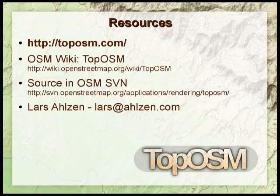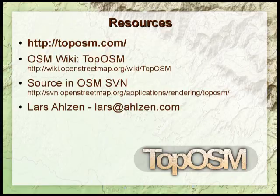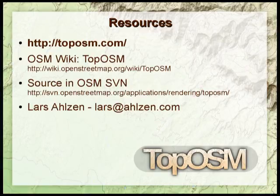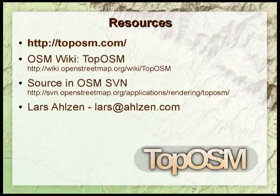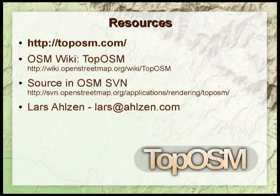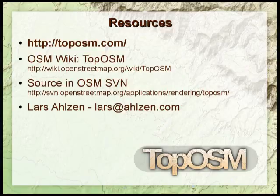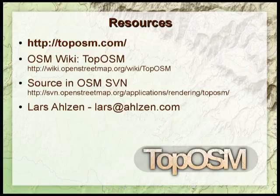If you haven't seen it, it's at toposm.com. Right now there are a few options, because the areas I specifically rendered — like Massachusetts, Colorado, and others — still have their own options since they have more zoom levels. I'm going to try to merge these as soon as I can. There's also some information on the OSM wiki — a little outdated in a few places but useful. The source code, if anybody wants to look at it or help out with some of these ideas, is in the OpenStreetMap Subversion repository under Applications/Rendering.